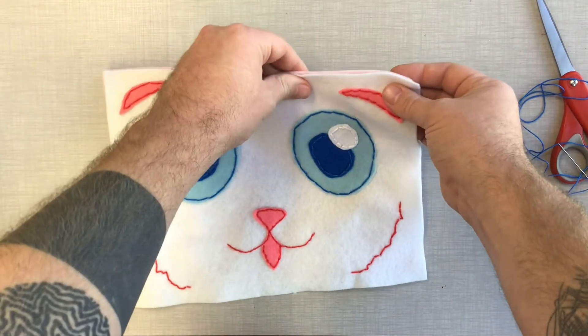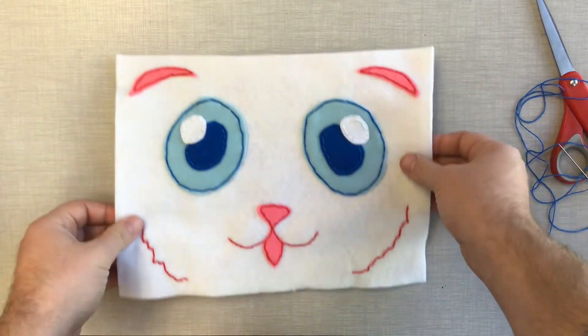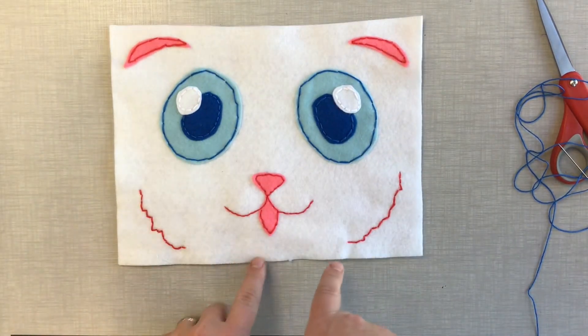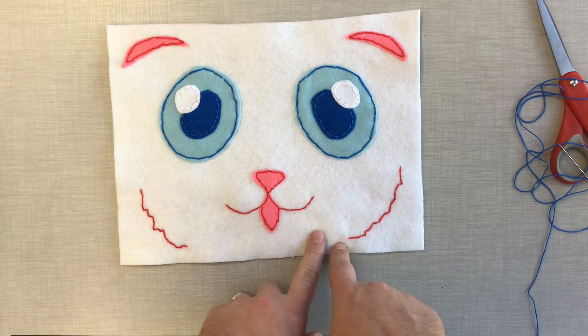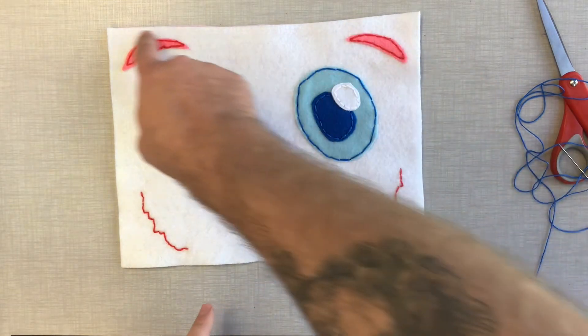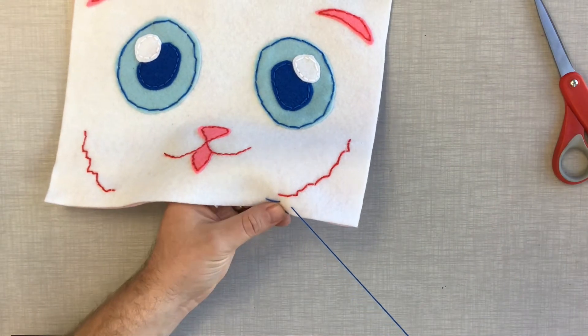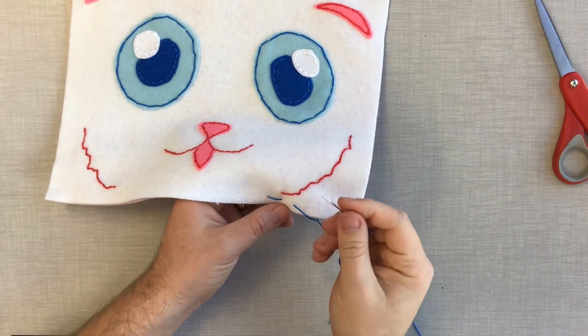Take your backing fabric and kind of line it up with the front so you can see what it looks like. And now we're going to sew all the way around the outside. Starting where my finger was, right there. And then we're going to loop all the way around still using this back stitch. There's a bunch of other stitches you can use. Feel free to look them up and try them out because they also look really good.